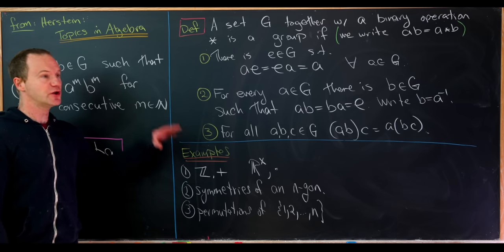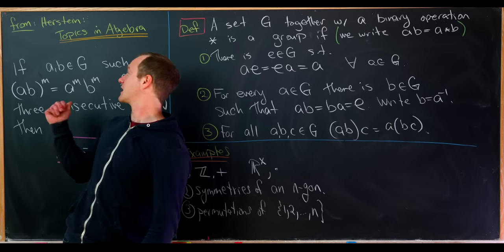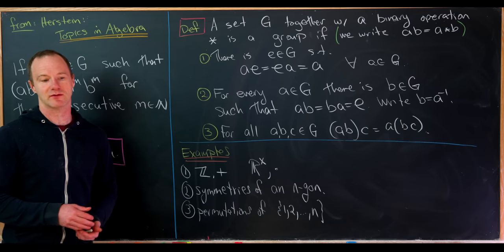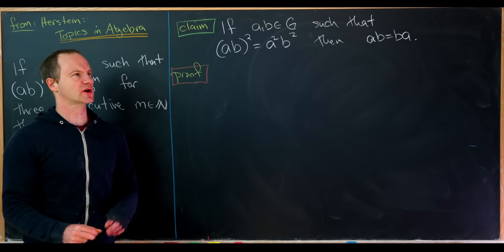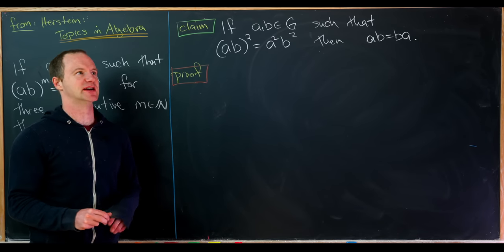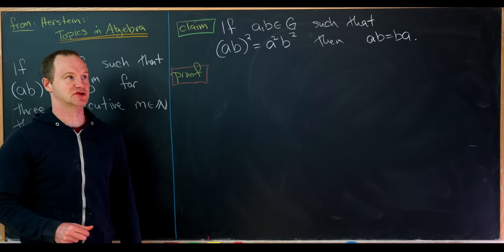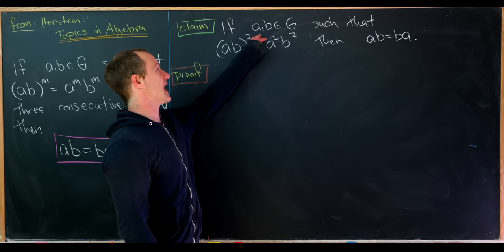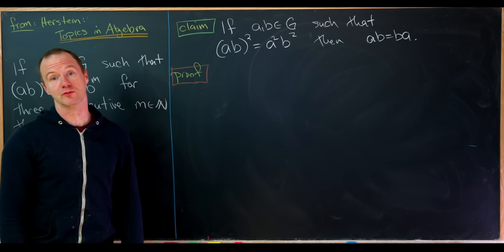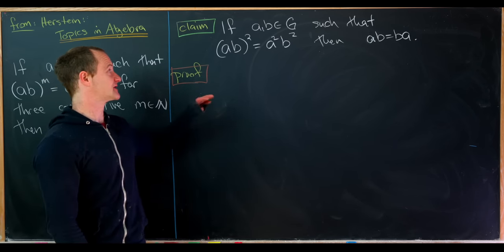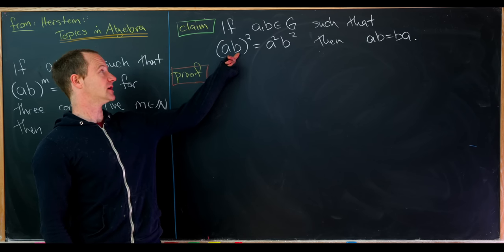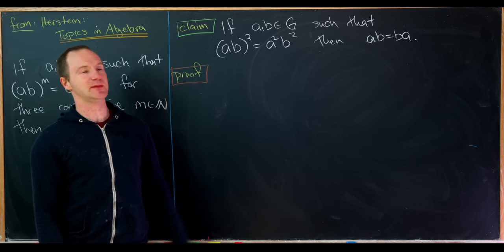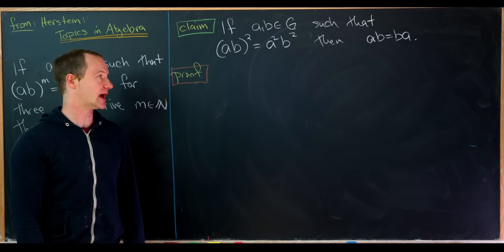We're going to do one more thing before we look at our main problem: a simpler version. This is a standard exercise in an abstract algebra class — to show that if a and b are in a group G and satisfy the rule that (ab)² equals a²b², then ab in fact equals ba.